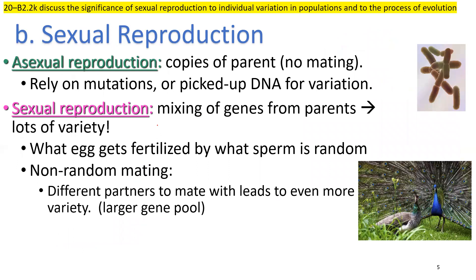The other source is sexual reproduction. One of your learning objectives asks you to discuss the significance of sexual reproduction to individual variation in populations and the process of evolution. Let's compare it with asexual reproduction. Asexual would be these bacteria here, which are prokaryotes — they don't have a true nucleus. When they divide, they will produce identical offspring, so any variation would rely on mutations or DNA that does get exchanged between bacteria. We'll go through that in more detail in Bio 30.